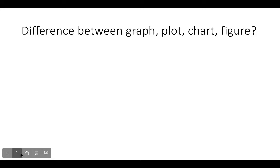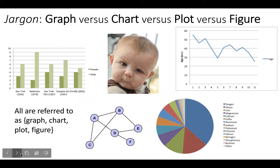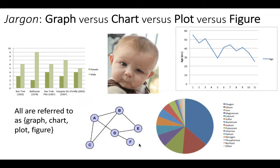The word graph is used interchangeably with words like plot, chart, and figure. The thing I was referring to with nodes and edges has the same name as a graph, and all of these having the same name causes some confusion. You almost always have to ask the people you're talking with: when you say the word graph, do you mean a thing that looks like this or something that looks like that? It really depends on the community — whether it's business people who think about pie charts or mathematicians who think about nodes and edges.